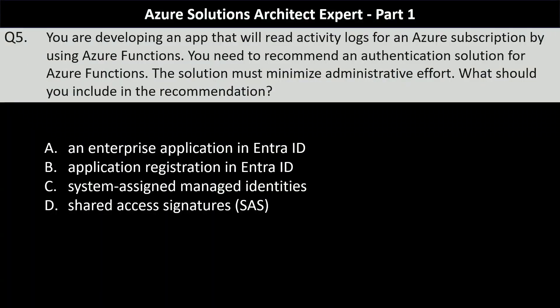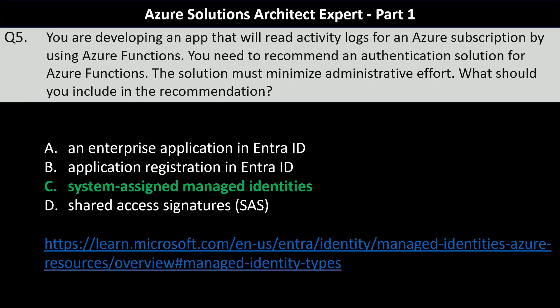Question number five. You are developing an app that will read activity logs for an Azure subscription using Azure Functions. You need to recommend an authentication solution for Azure Functions. The solution must minimize administrative effort. Your options are an enterprise application in Entra ID, an application registration in Entra ID, system-assigned managed identities, or shared access signatures (SAS). System-assigned managed identities are the correct answer because they provide a secure, automatically managed identity for Azure Functions, eliminating the need for manual credential management and reducing administrative effort. They integrate seamlessly with Azure services, ensuring secure access to resources like activity logs without additional configuration or secret handling.